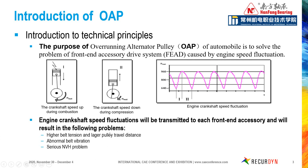As a result, belt tension becomes unclear, pulley travel distance becomes larger, belt vibration becomes abnormal, and NVH becomes very serious. So many engineering troubles occur, and it needs an effective solution to solve these problems.